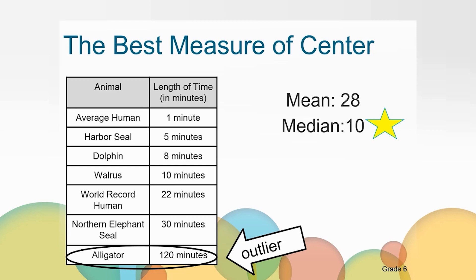You might have noticed that we didn't find a mode for this set of data. Why do you think that is? In this set of data, none of the values occurred more than one time, so we cannot identify a mode.